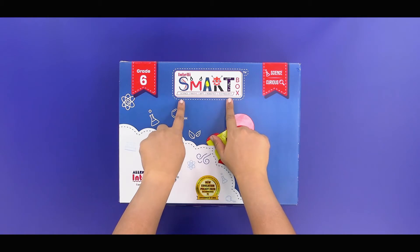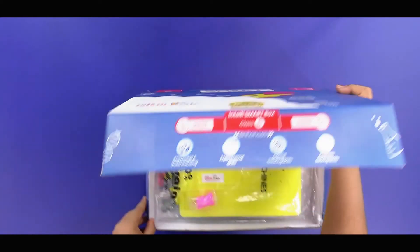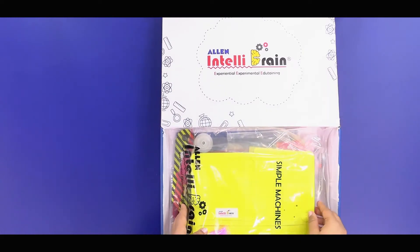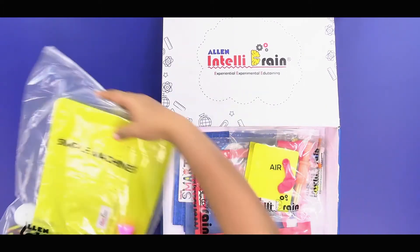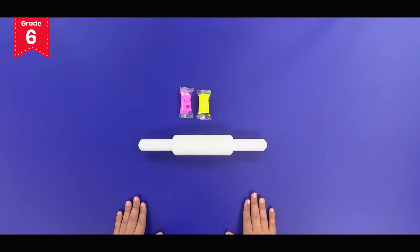From the IntelliSmart box, take out the simple machine's activity kit. Take out the clay packets from the kit. From your home you will need a rolling pin which looks like this.